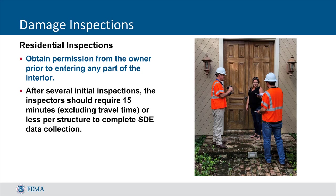An important rule of thumb when performing inspections is that entering a home or other private property should be done with caution, and only if the property owner has given you explicit permission to do so. Most inspections should begin by knocking on the door and alerting the owner to your presence, explaining who you are and the organization you represent, then asking permission to perform a damage assessment. If the owner refuses, do not put yourself in danger — simply report the refusal back to your team lead or supervisor. If there is no one present, do not enter the structure, as many assessments can still be completed from the outside.